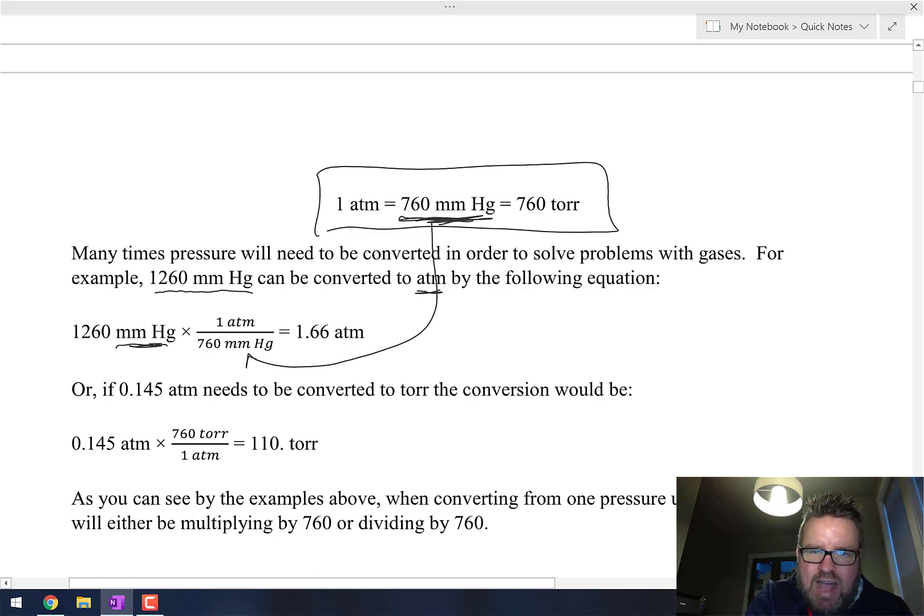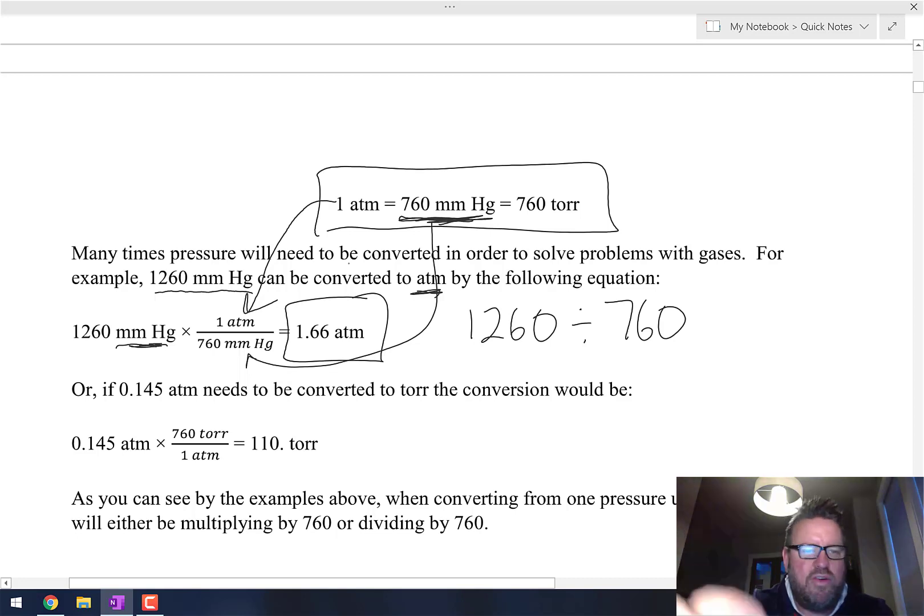Since they're asking me for atmospheres, I put atmospheres on the top. Then in my calculator I just go 1260 divided by 760 and you can see I get my answer of 1.66.